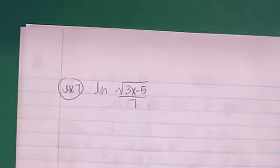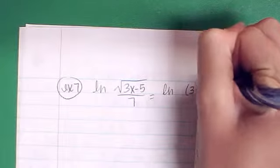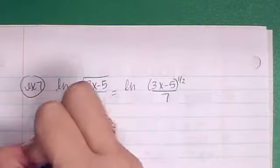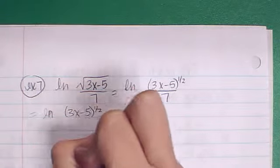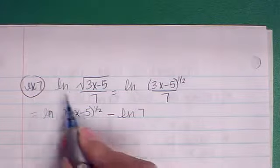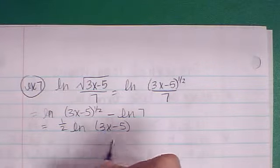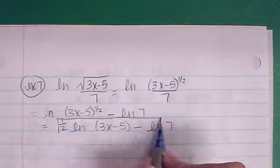Example number 7 is the natural log of the square root of 3x minus 5 over 7. I have something being divided and something to a power. Let me rewrite the top as a power first, so that's to the 1 half power over 7. Then I subtract. So I have the natural log of 3x minus 5 to the 1 half minus the natural log of 7. And the last thing I can do is bring the 1 half out front. So I have 1 half natural log of 3x minus 5 minus the natural log of 7.